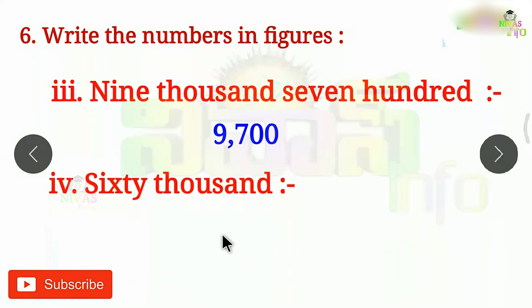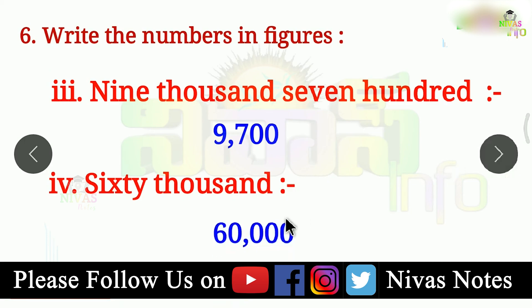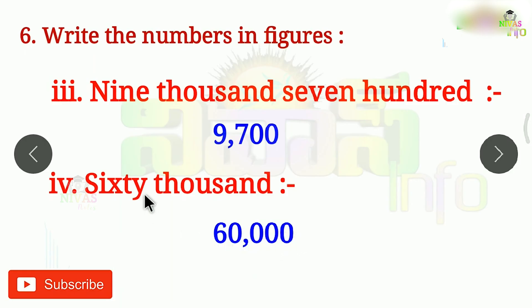Next problem is 60,000. We have to write 60,000. We have to write 100s, 10s, 1s — we have to write 0 for each. We have to write 60,000 and 60. We have to write 1,000s here — we have to write 100,000.